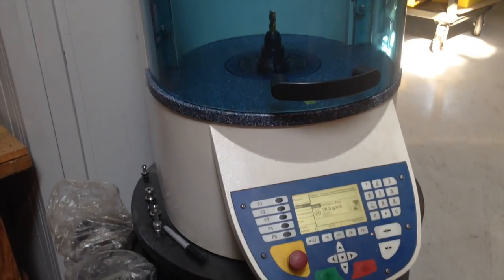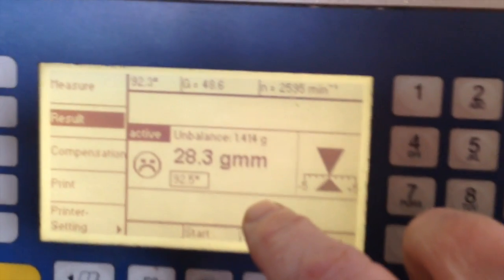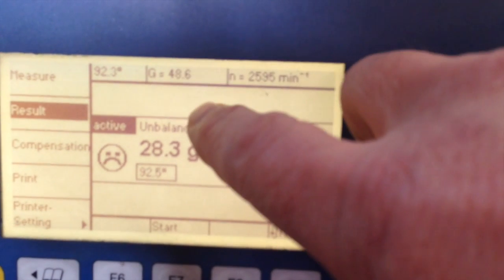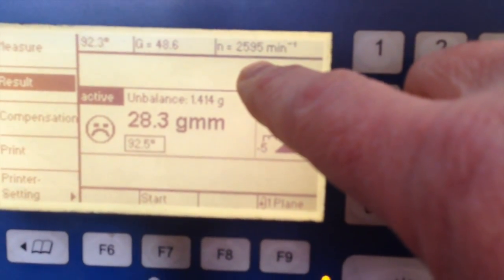And as you can see the balance grade came out at 28.3 gram millimeter of unbalance, G 48.6 at 2,595 RPM.